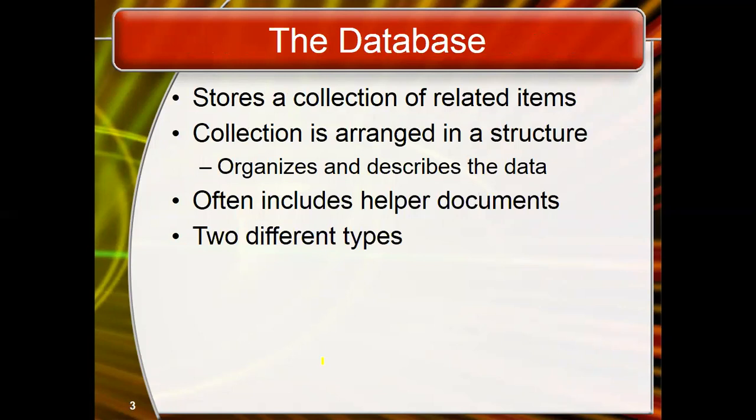A database is an organized collection of structured information. We store data into databases, and database comes after the data. Data is a collection of distinct units of information used in a variety of forms — text, numbers, media, and more. In computing, data is basically graphics and figures that can be translated into a particular form for efficient movement and processing. When we enter data into fields of a database, at that time it is raw data, but when it forms a complete record, then it is structured and organized.